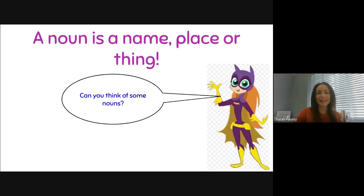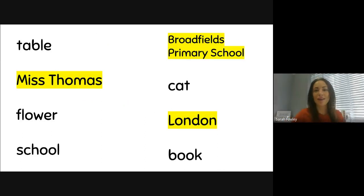That's right, a noun is a name, place or thing. Can you think of some nouns? Maybe you can write them down. Brilliant. Here are some nouns. Maybe you thought of the same ones as I did. We have table, Miss Thomas, flower, school, Broadfield's primary school, cat, London and book. They are all names, places or things.